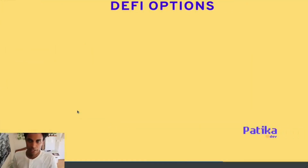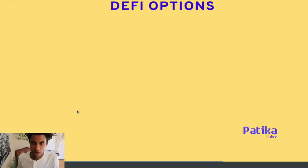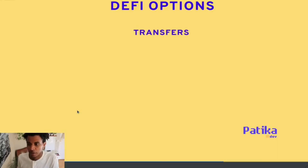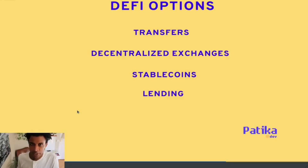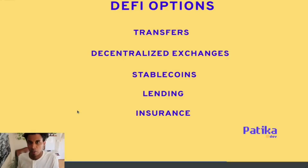Let's look at what we can actually do within DeFi — at least some of the options. We could have an entire course on DeFi alone, but this gives a brief overview of what can be done. We can do transfers — account to account. We have decentralized exchanges for how we exchange money. Stable coins — what those are and how they work. Lending — like receiving a loan from a bank. And insurance — how we would insure certain things on the blockchain.